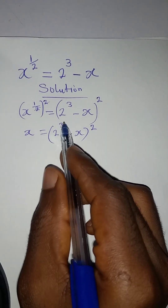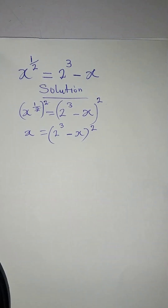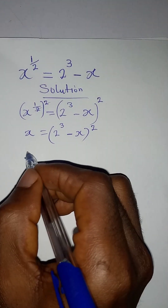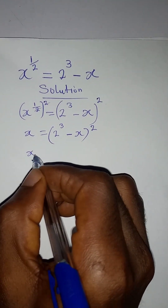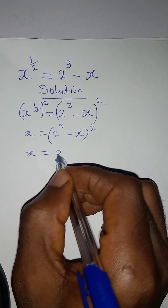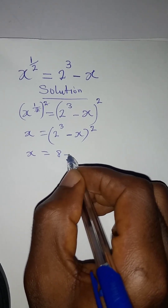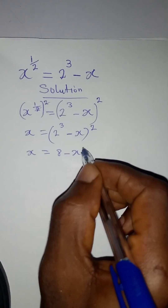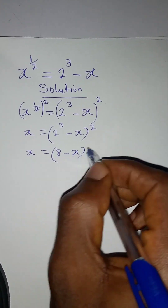And 2 to the power of 3 is the same thing as 8, so we have x equal to 8 minus x, squared.